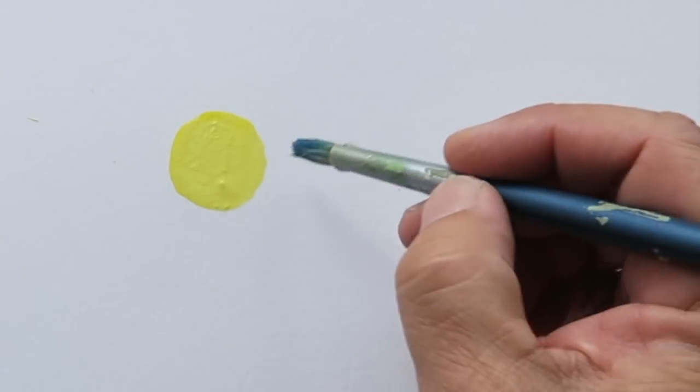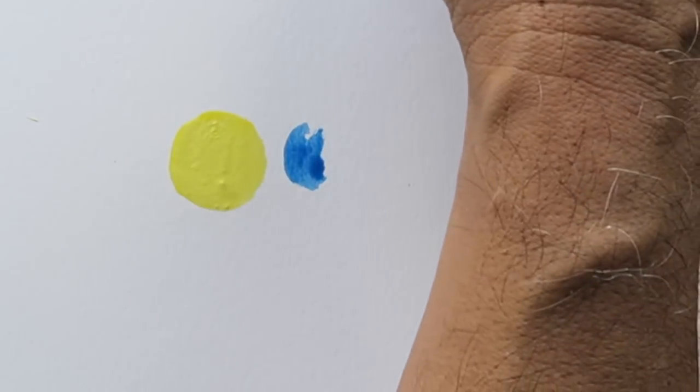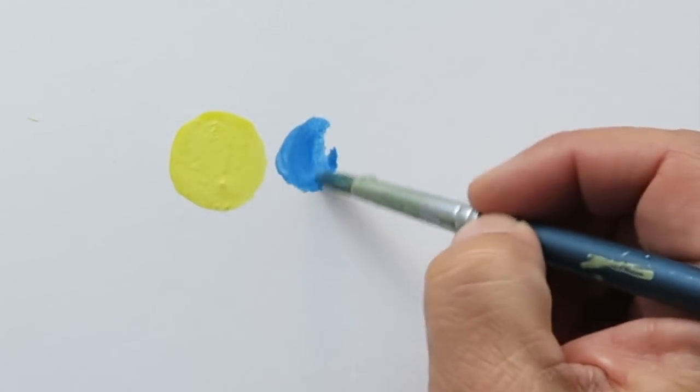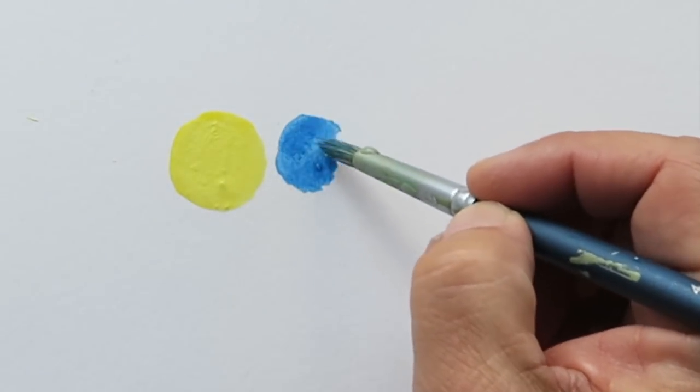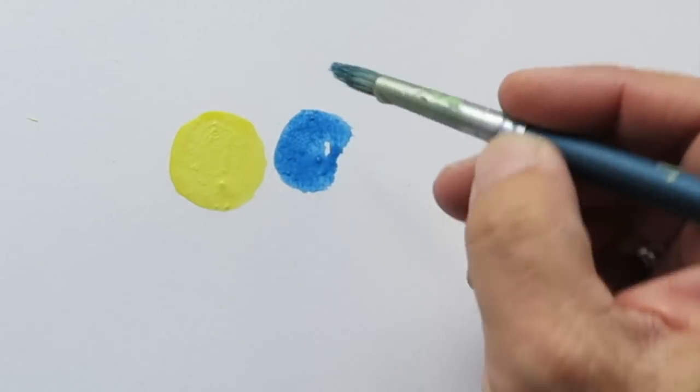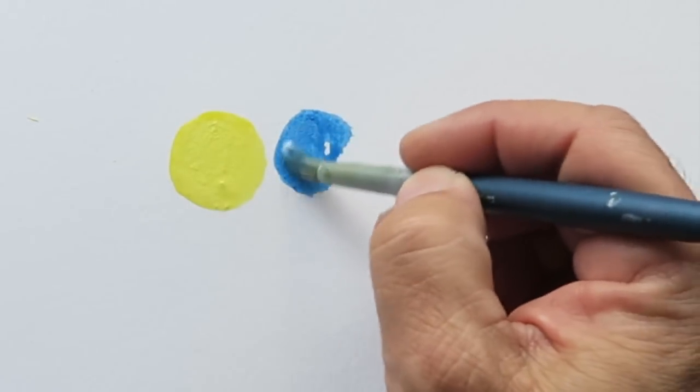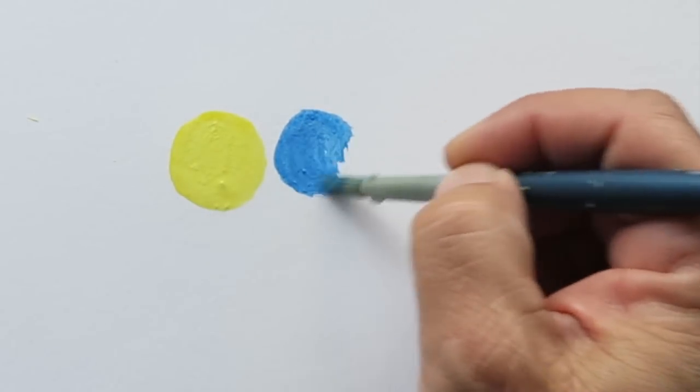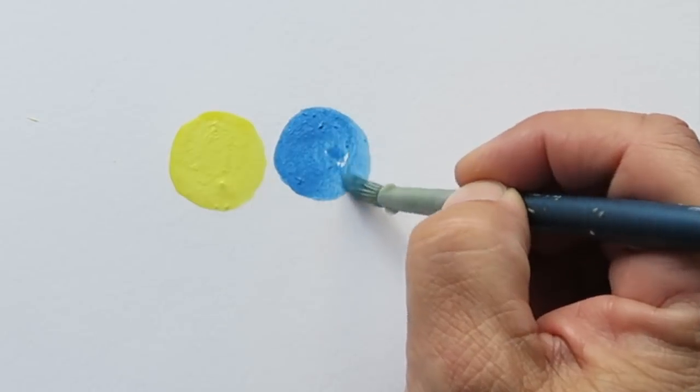And I'm going to do the same thing with the blue. I want something not too dark, but something that has a little bit of white in it. And you can think about it as taking some of the intensity out of the color. But you can also think of it as because you're adding white to both, you're giving them something in common. So they both have white in common.